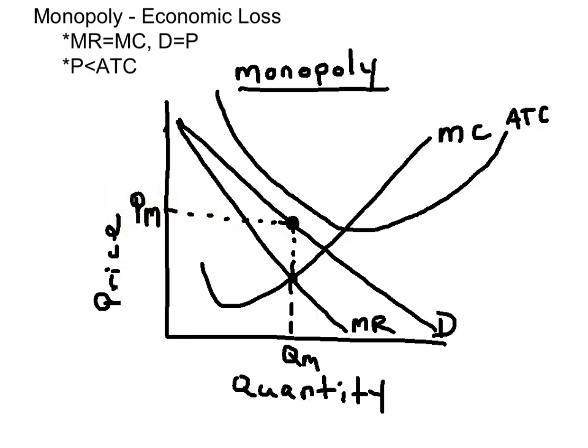It's very important that the price is less than the ATC. The per-unit economic loss would be ATC minus the price.